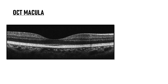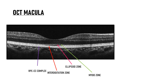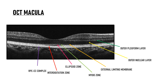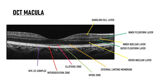Let's revise the layers of retina on OCT once again. The hyper-reflective band at the base is the RPE-CC complex, then the interdigitation zone, then the ellipsoid zone, then the dark myoid zone, then the hyper-reflective external limiting membrane, then the outer nuclear layer, then the outer plexiform layer. The next layer is hypo-reflective — the inner nuclear layer — followed by the hyper-reflective inner plexiform layer, then the ganglion cell layer, then the retinal nerve fiber layer, and finally the innermost layer, the internal limiting membrane, which is hyper-reflective.